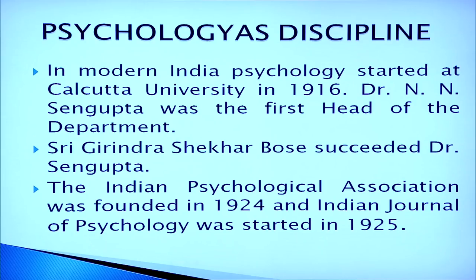In modern India, psychology started at Calcutta University in 1916. Dr. N.N. Sen Gupta was the first head of the department. Shri Girendra Shekhar Bose succeeded Dr. Sen Gupta. The Indian Psychological Association was founded in 1924 and the Indian Journal of Psychology was started in 1925.